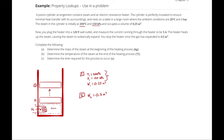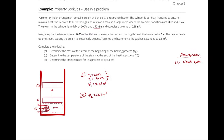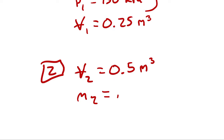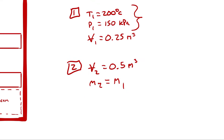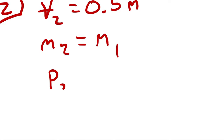What else do I know about state 2? We can assume a closed system, meaning mass is not allowed to cross the system boundary, so m2 equals m1. But that is not two independent intensive properties — volume isn't even intensive. The key is that the problem told us it was isobarically expanding. Isobaric means constant pressure, which means p2 equals p1.